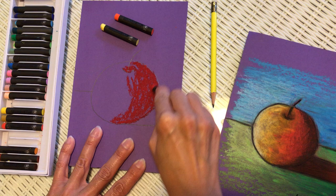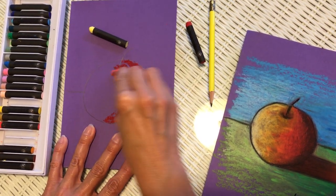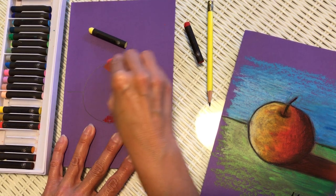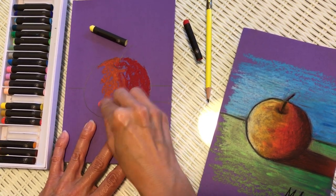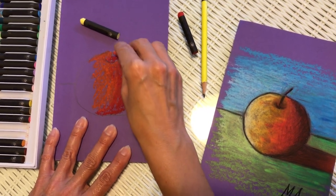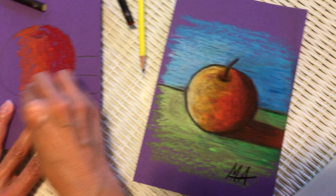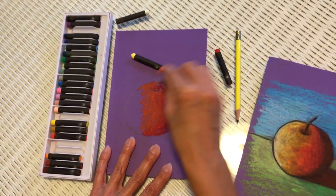Then we're going to add the medium color in the middle. We can overlap the colors. It's the beauty of the oil pastel. They blend very well. It's not like using crayons.